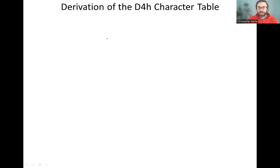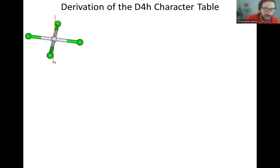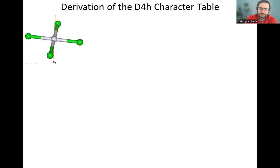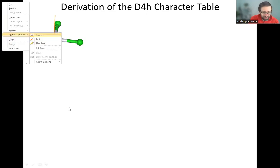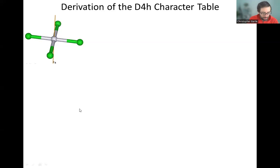In this video we are going to be deriving the D4H point group, and we always start off with an example molecule. Here it could be any square planar molecule — it could be xenon tetrafluoride, could be tetrachloroplatinate anion. There are a lot of different square planar molecules out there, but the square, just a planar two-dimensional square, is the simplest example of a D4H point group. And then we come up with all the different symmetry operations for that point group.